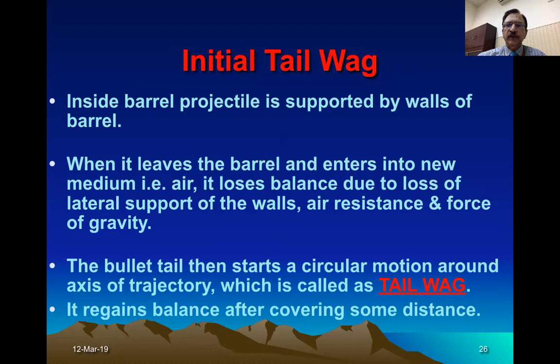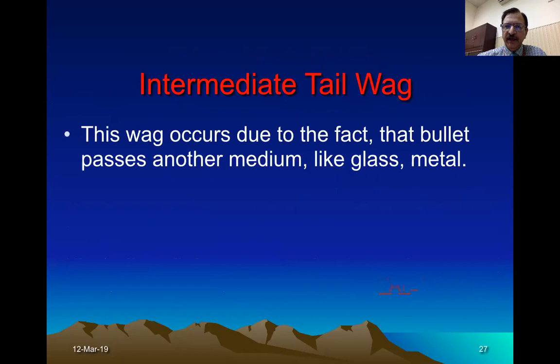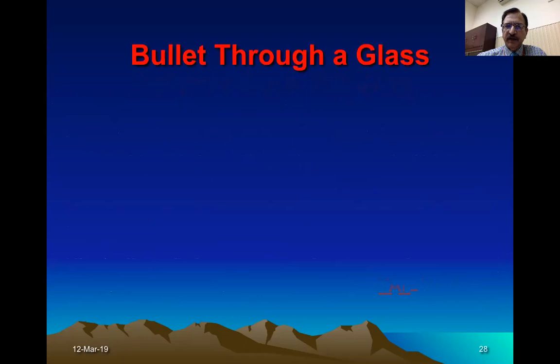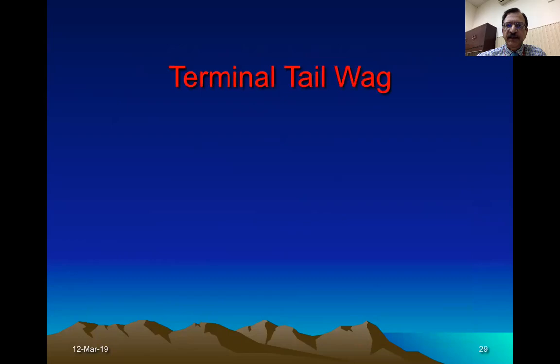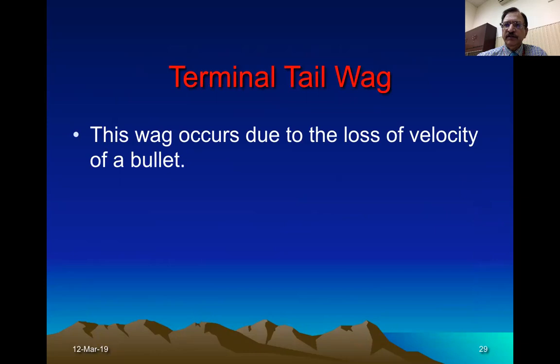After traveling some time, the bullet resumes a balanced and steady flight and the wag is lost. The intermediate tail wag occurs when the bullet travels through another medium such as water, glass, or metal, causing it to become unstable again. The terminal tail wag is instability due to reduction in velocity after the bullet has traveled for a certain period of time.